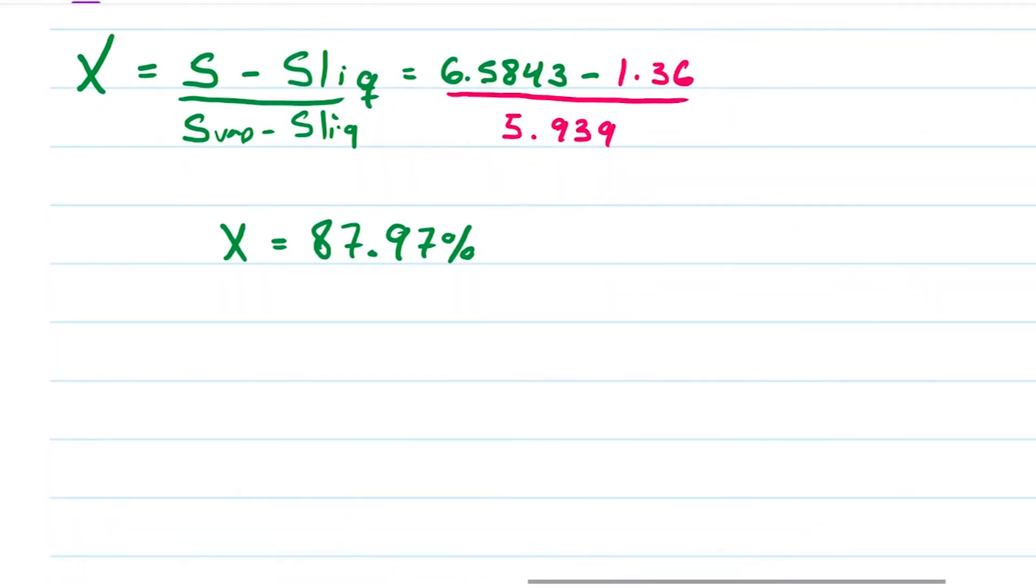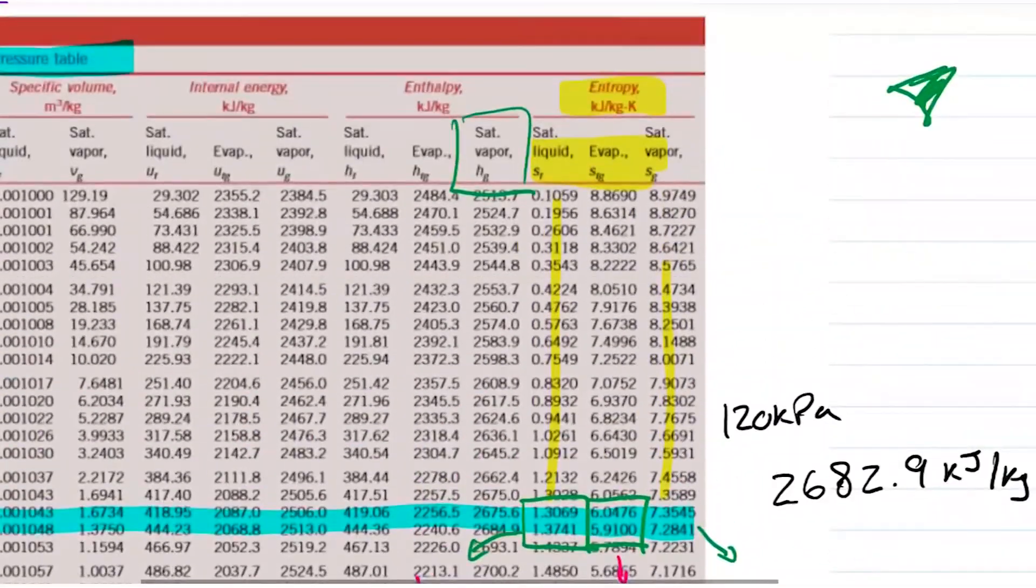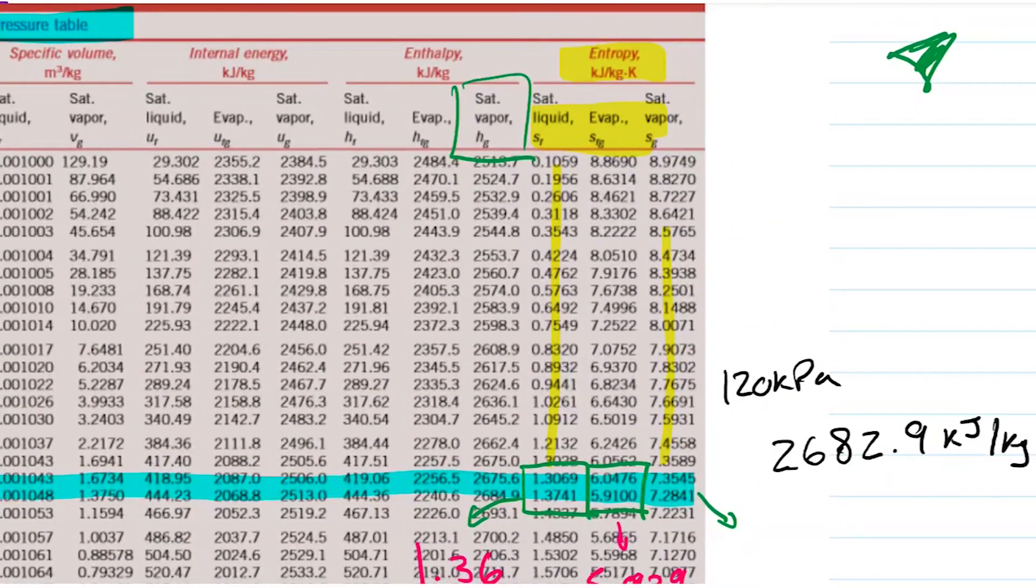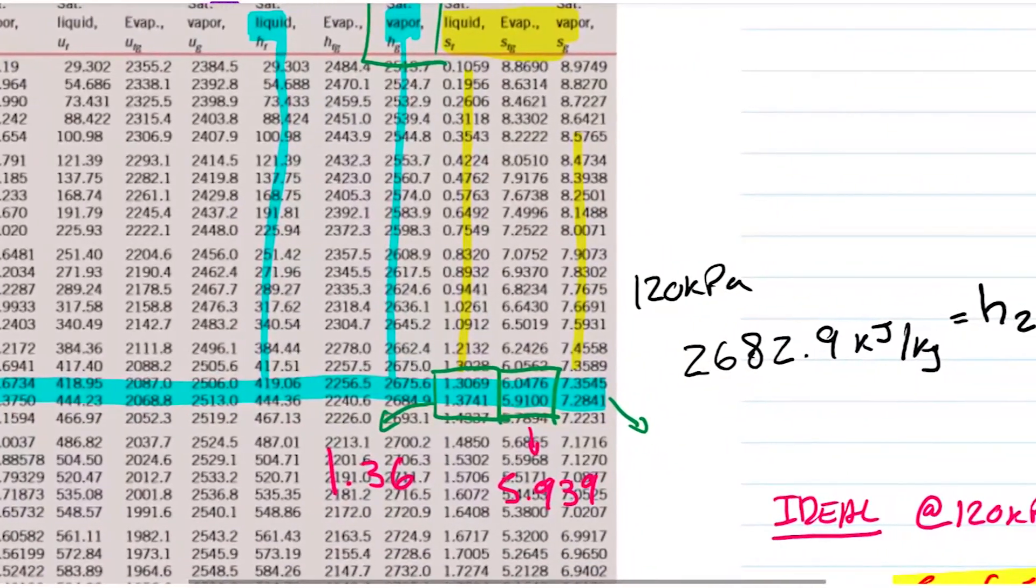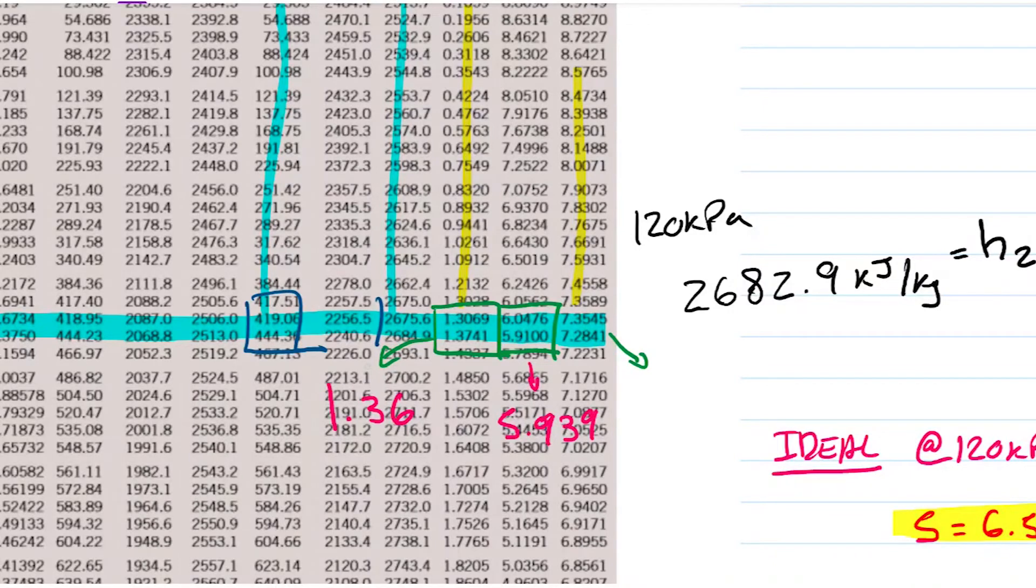But remember that all this is to be able to find what's the enthalpy of this imaginary state that we're calling 2S. And if it's a saturated mixture, it's just going to be 87.97% times the enthalpy of the saturated vapor plus 100 minus 87.97%, that is the rest, times the enthalpy of the saturated liquid. Once again I don't have those values per se and I'm going to have to interpolate. I only have for 101 and 125, so I need to interpolate over here for enthalpy saturated liquid and saturated vapor.